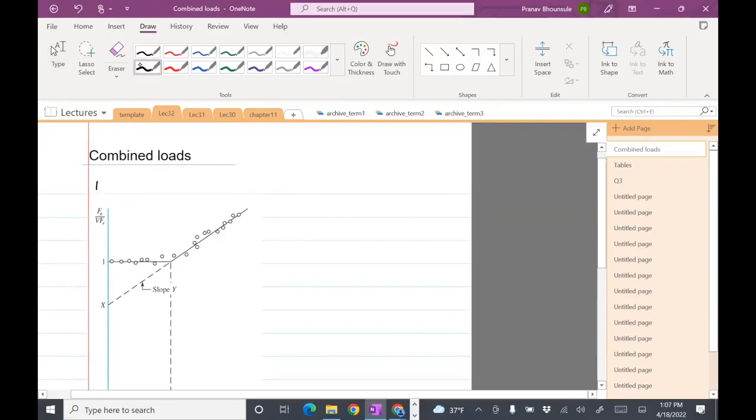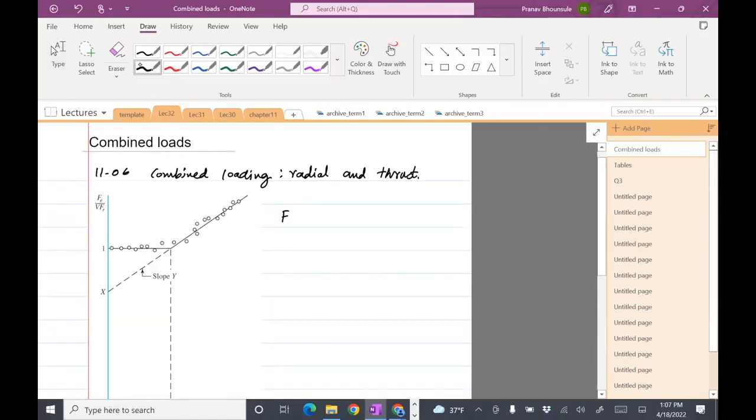So this section is 1106, combined loading, that would be radial and thrust. Thrust is also axial loading. We saw the formula is F L raised to one over A is a constant, where this is radial loads. Assuming that there's only radial loads, you can use this formula.